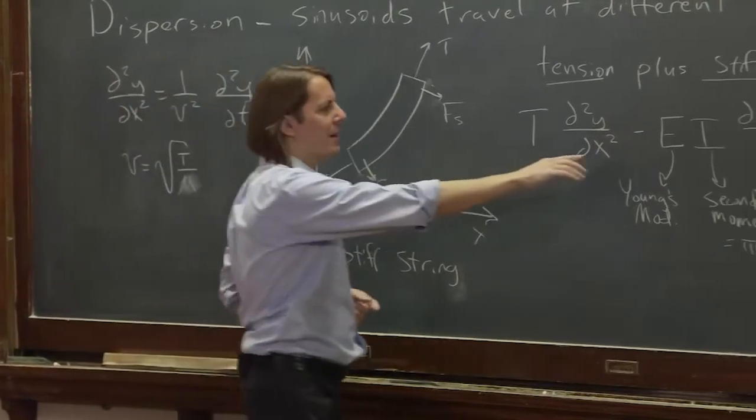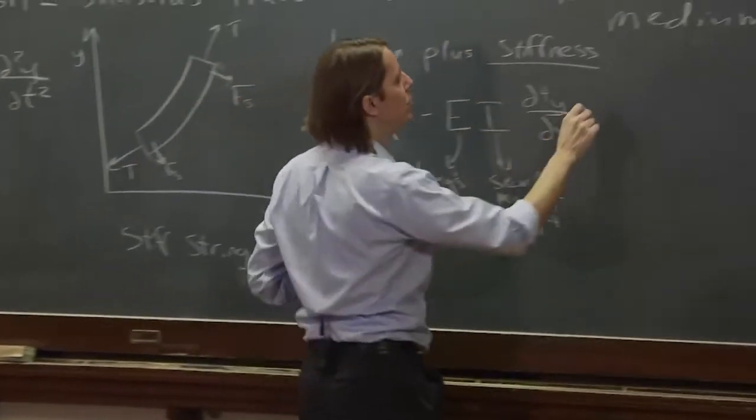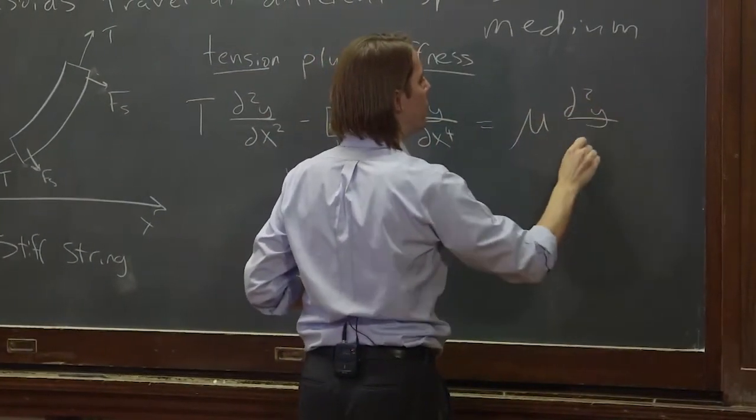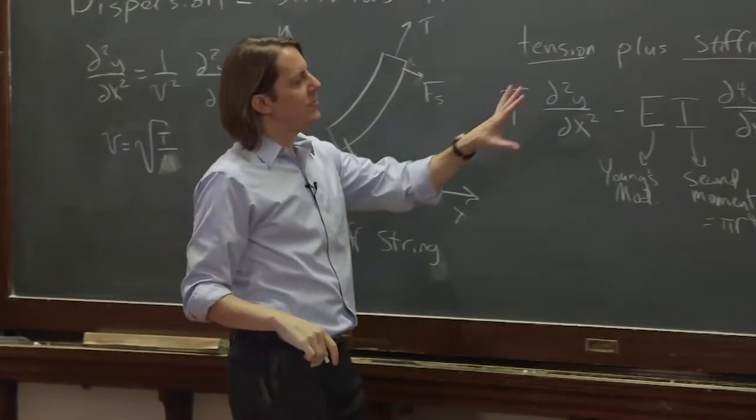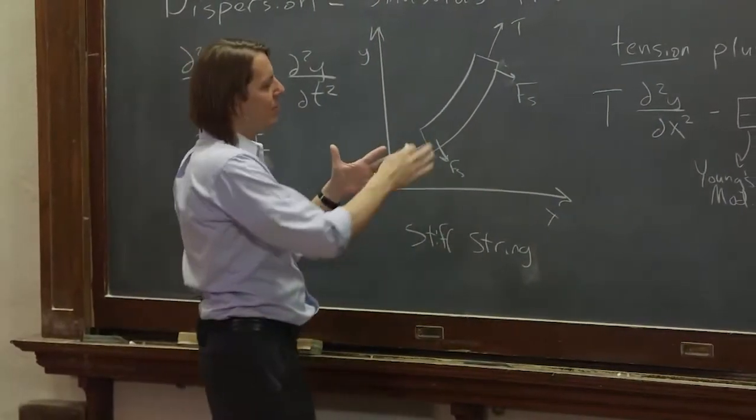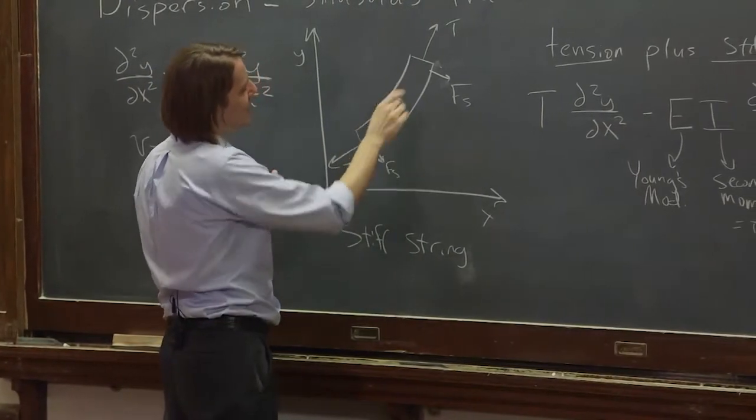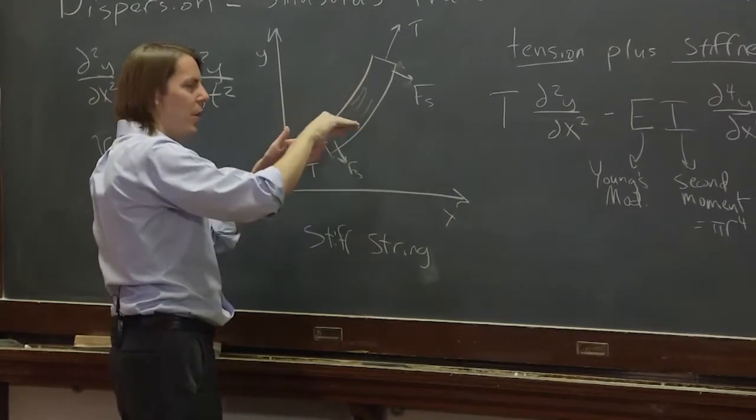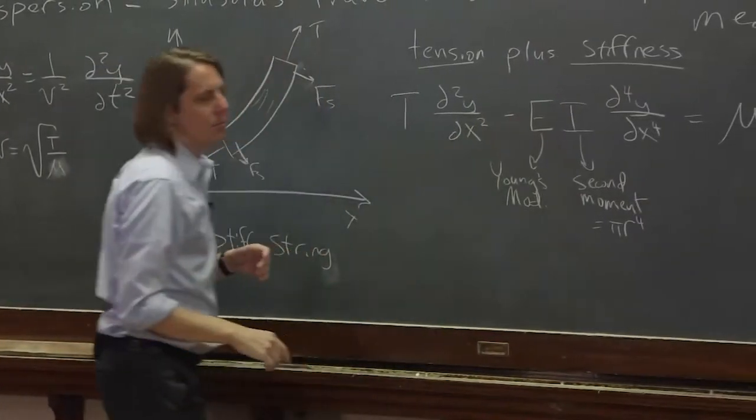So the force pulling it back depends on the curvature of the curvature. Let me just finish the equation. It equals μ d²y/dt². So to derive this gets fairly deep into continuum mechanics and we don't want to get into it. But I can kind of describe it a little bit. The reason there's such a high derivative with space is it depends on this curvature but also how that curvature is changing as you go across the material. That's why you end up with such a high derivative there.